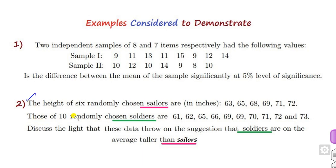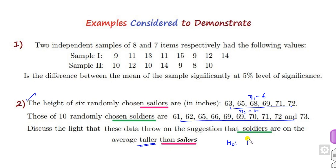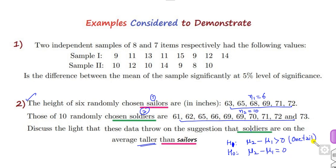In Example 2, the heights of sailors and soldiers are given. The sailor group has 6 elements (n1 = 6) and the soldier group has 10 elements (n2 = 10). Since n1 ≠ n2, this is definitely an independent sample T-test. We want to show that soldiers are taller on average than sailors. Calling sailors group 1 and soldiers group 2, H1 is: mu2 minus mu1 is greater than 0, and H0 is: mu2 minus mu1 equals 0. Since H1 uses strictly greater than, this is a one-tail test. Open SPSS and enter all the values.